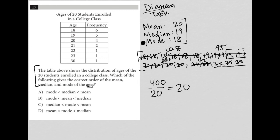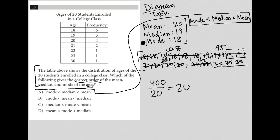Now when I arrange this in correct order, the mode is the smallest value at 18, which is less than the median, which is the middle value at 19, which is less than the mean, which is the largest value at 20. That tells me that the correct answer here is choice A.